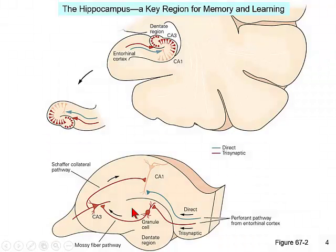The key organ very often involved in memory and learning is the hippocampus, which Ralph introduced in the previous lecture. You remember HM's brain and HM's hippocampus, which proved elegantly that the hippocampus is required for memory. Hippocampus itself means seahorse, and this wound-around region looks like a seahorse.